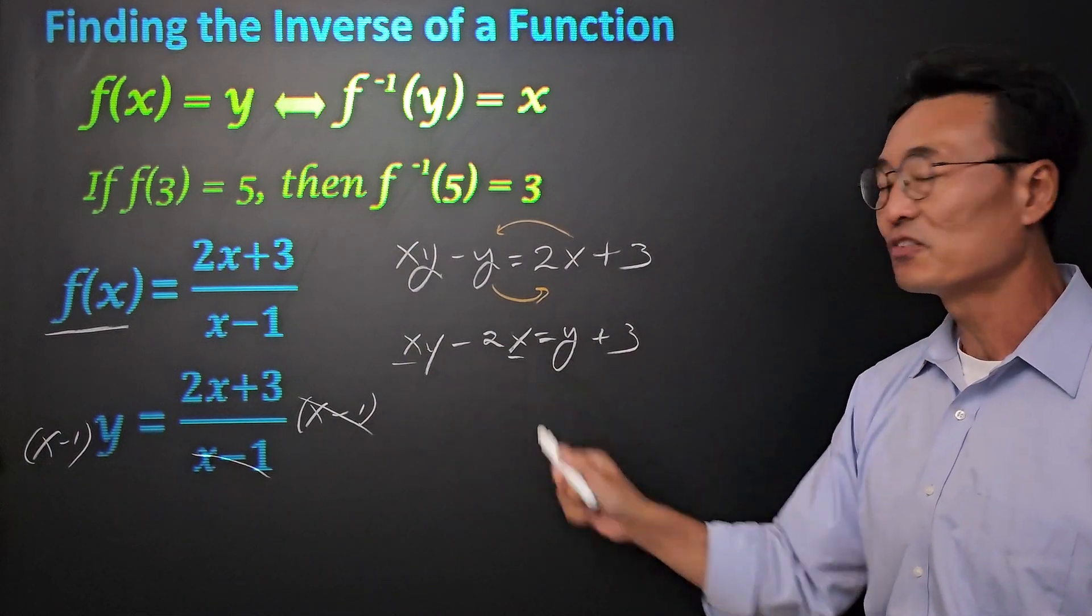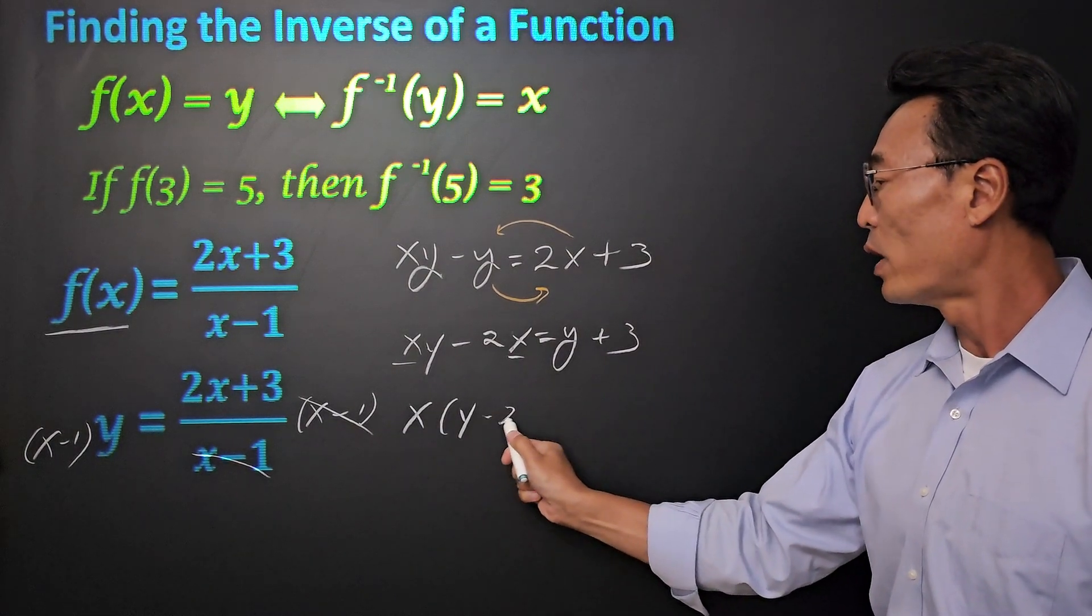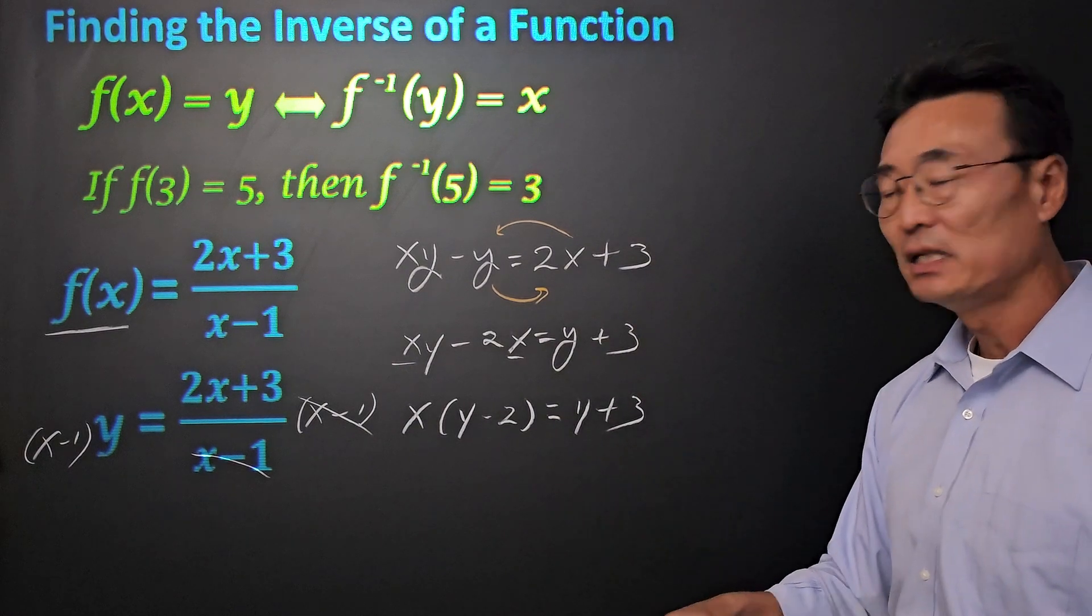Next, we want to factor out the x so that x will be by itself. So we have x times y minus 2 equals y plus 3.